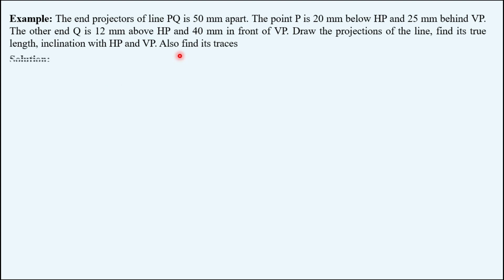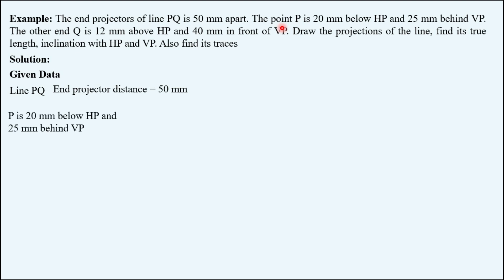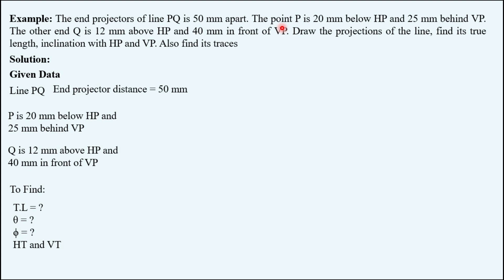Let's extract the given data first. The name of the line is PQ. The end projector distance is given as 50 mm. The position of front view and top view of point P is 20 mm below HP and 25 mm behind VP. Similarly, the position of endpoint Q is 12 mm above HP and 40 mm in front of VP. What is required: true length, inclination with HP (theta), inclination with VP (phi), and the traces HT and VT.